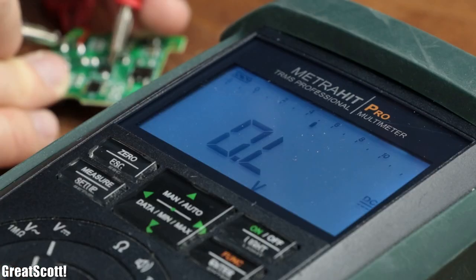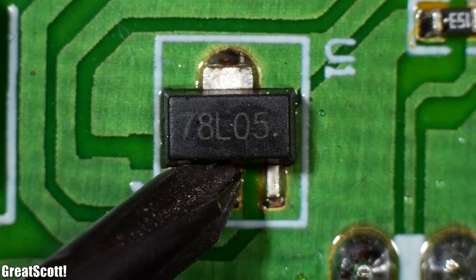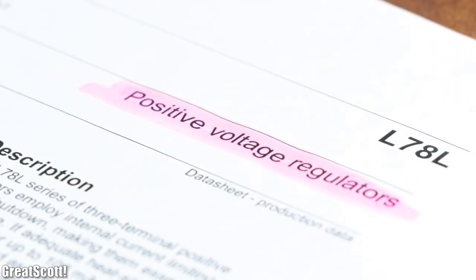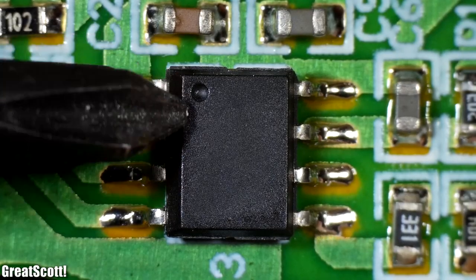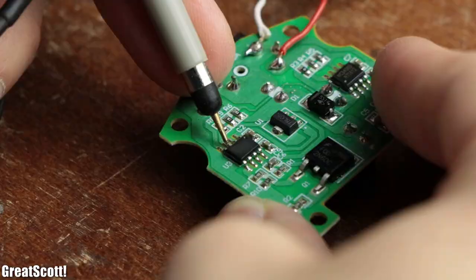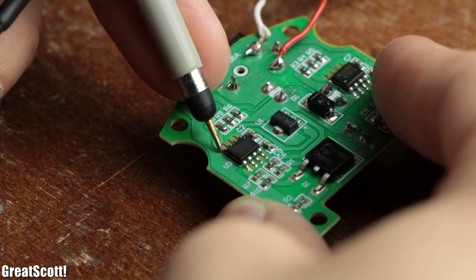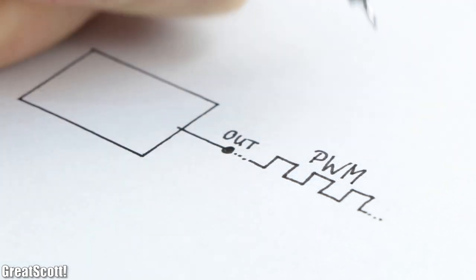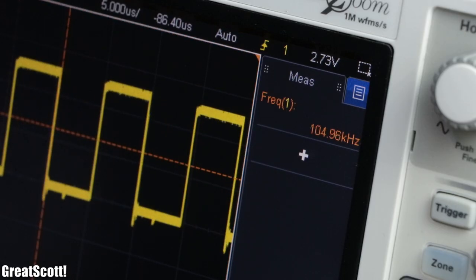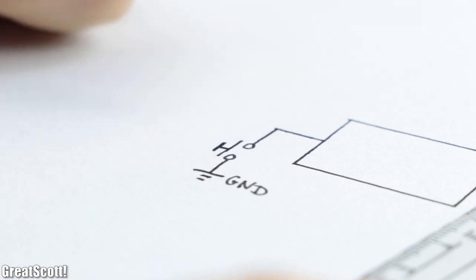This voltage is then stepped down to 5 volts through the 78L05 linear voltage regulator in order to supply the last IC, whose label was unfortunately scraped off. But after probing all of its pins it seems like its only function is outputting a PWM signal with a frequency of 105 kilohertz as soon as the tactile switch is pushed.